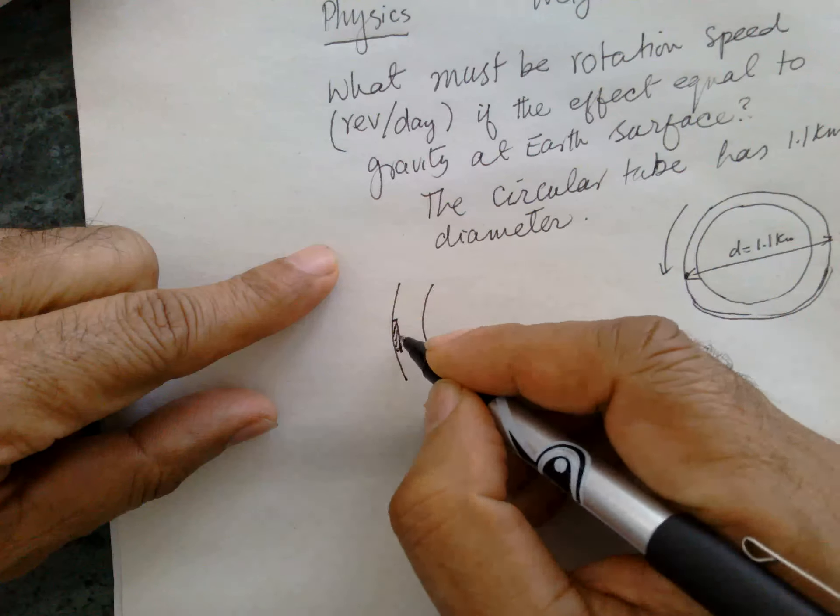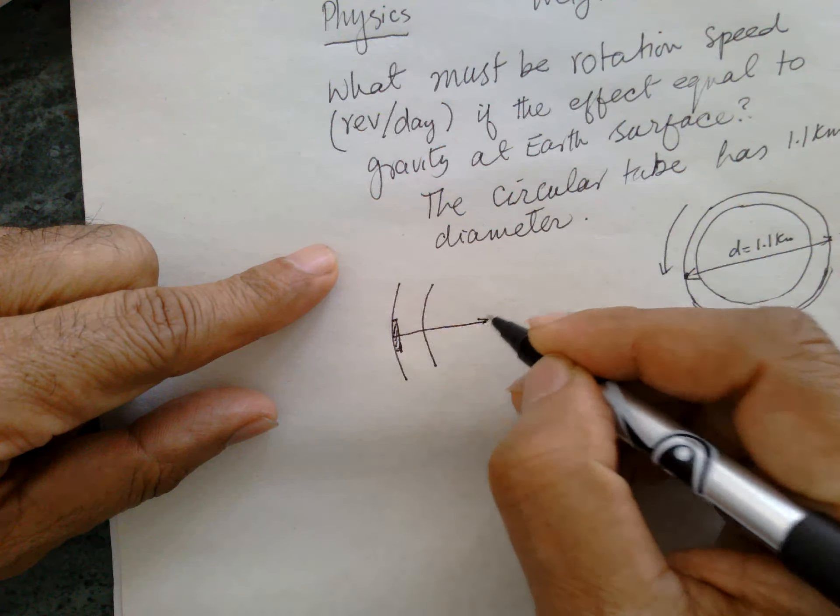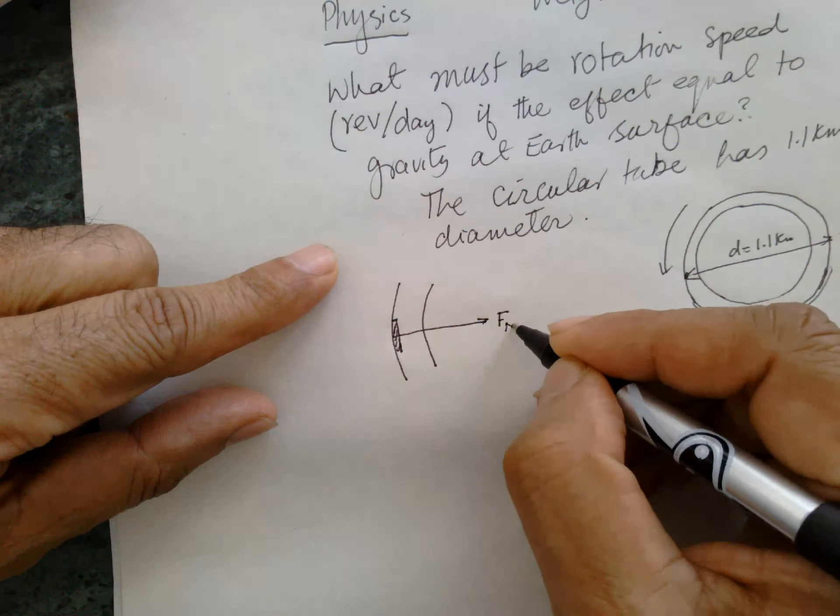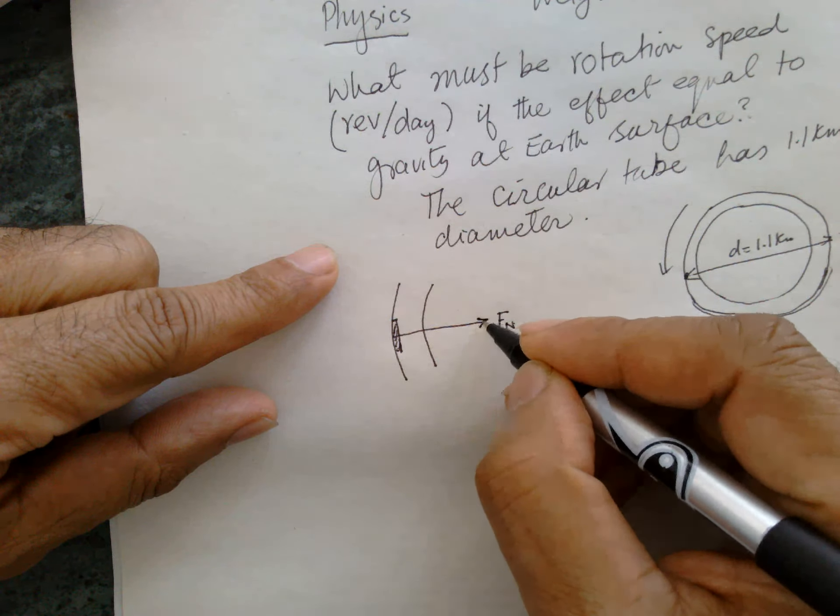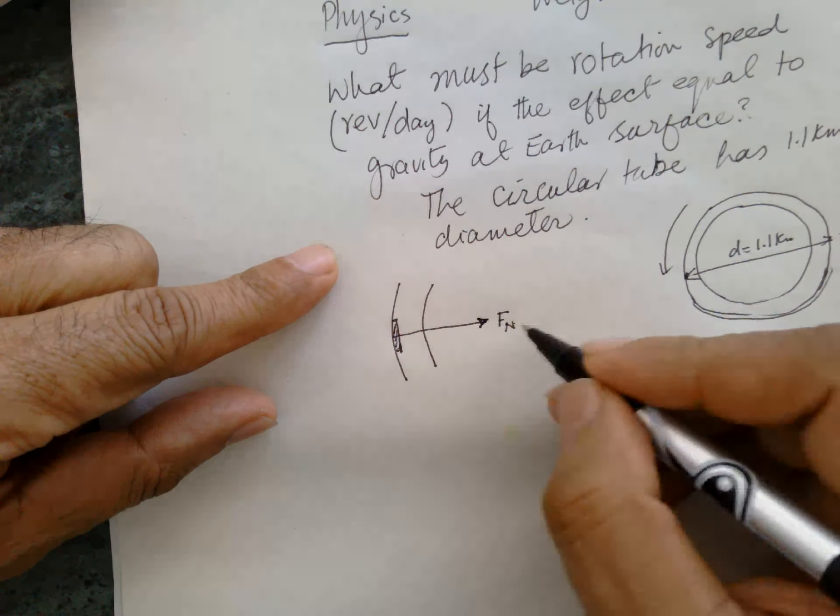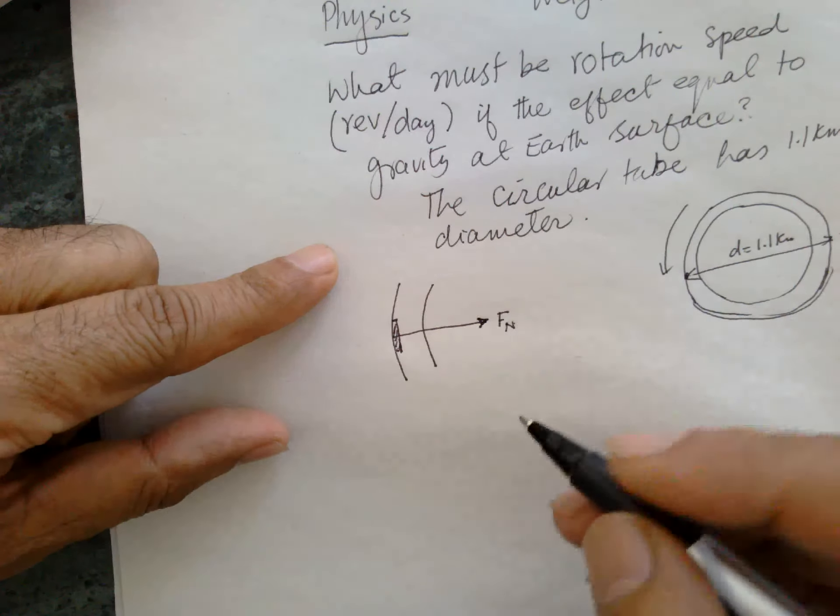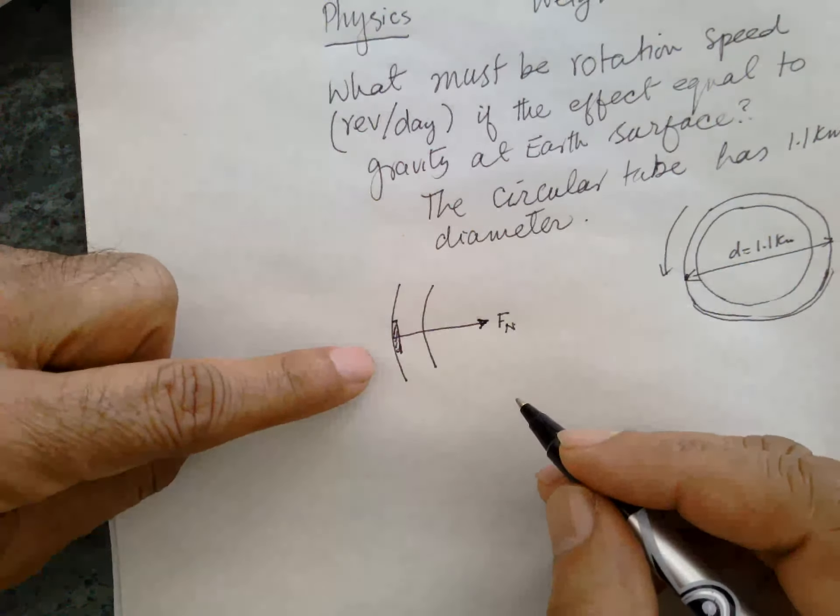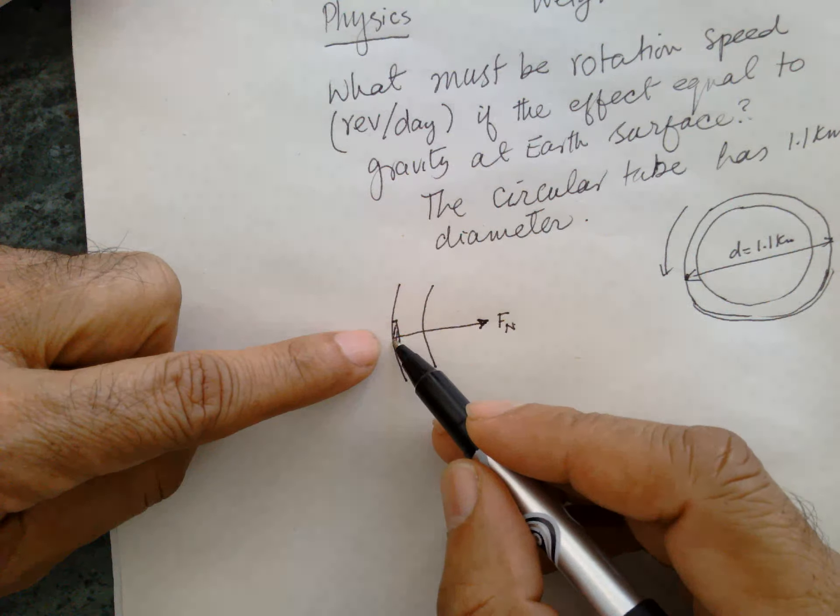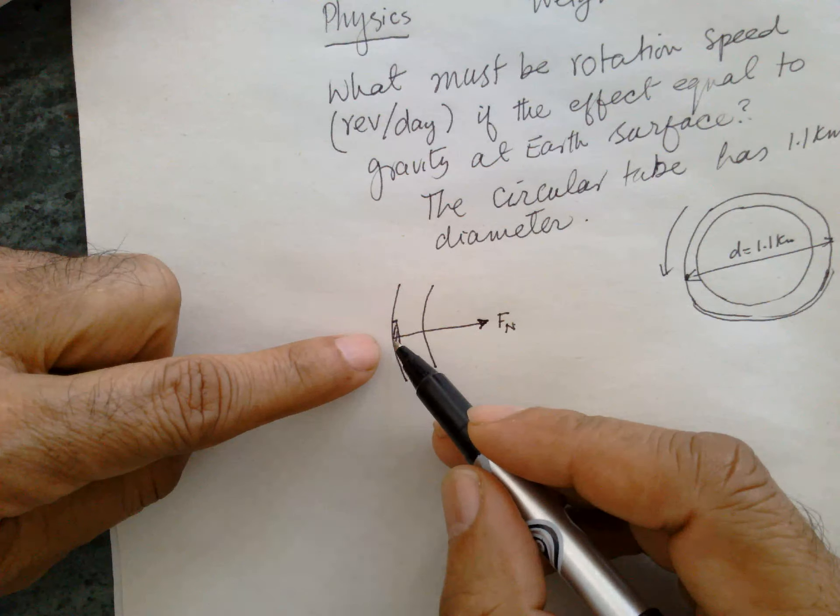This object has a contact force and the contact force has a normal force which is Fn, and this also has centripetal force. So that there should be weightlessness, the contact force between object and the wall should provide the centripetal force.